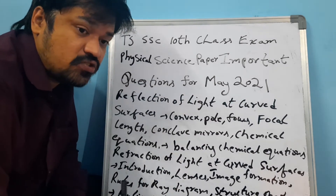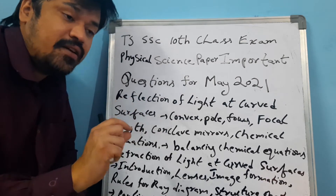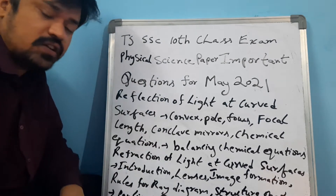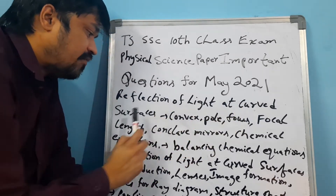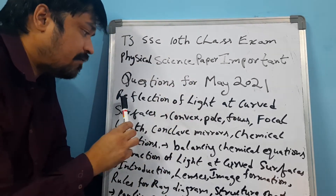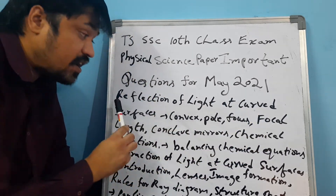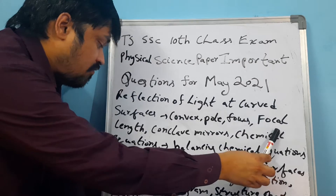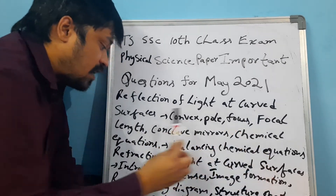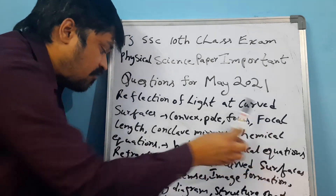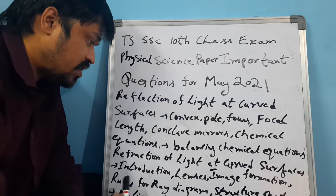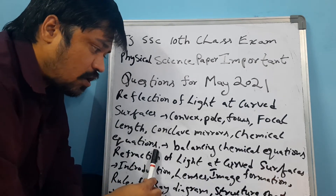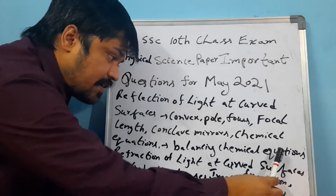I suggest each and every student to understand each and every topic. The first topic we are going to discuss is reflection of light and curved surfaces. In reflection of light and curved surfaces, the important topics include: convex pole, focus, focal length — what is the convex, what is the pole, what is the focus, what is the focal length. Students should understand their definitions and meanings. Next: concave mirrors — what is concave mirrors. Next: chemical equations, including balancing chemical equations.